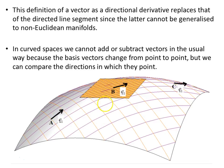What we can do is compare the directions of different vectors at different points, and that is why this is an important result for general relativity.